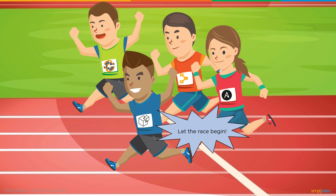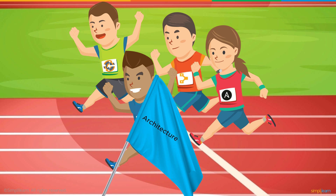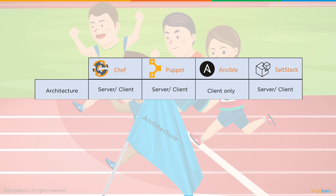Now let's see how all four tools stack up next to each other. Starting with architecture — Chef, Puppet, and SaltStack all use a server-client architecture. The exception is Ansible, which is a client-only solution: you push instructions from a server out into your network, and there isn't two-way communication back to the main server about what's actually happening in your network.